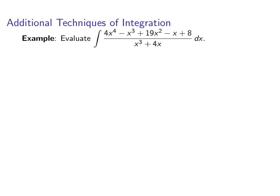Hello, calculus fans! Okay, so we're going to do one more integral involving partial fractions. This is going to have a little twist to it. So we're going to integrate 4x^4 - x^3 + 19x^2 - x + 8 all over x^3 + 4x dx. Wow, what a mess.